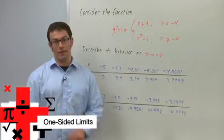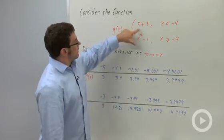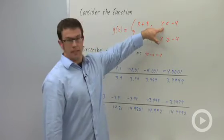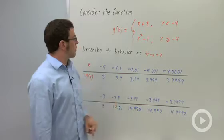I want to talk about one-sided limits. Here's a function. g of x equals, and it's piecewise defined, x plus 8 for x less than negative 4, and x squared minus 1 for x greater than or equal to negative 4.